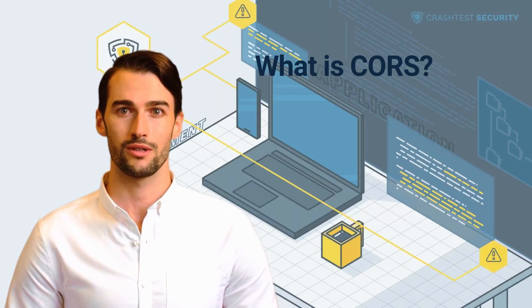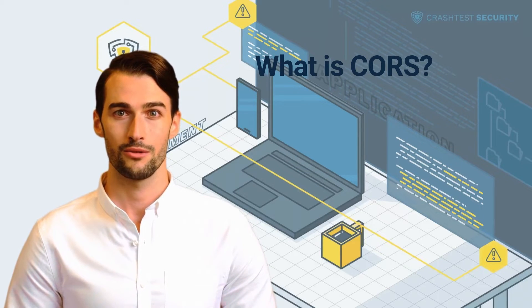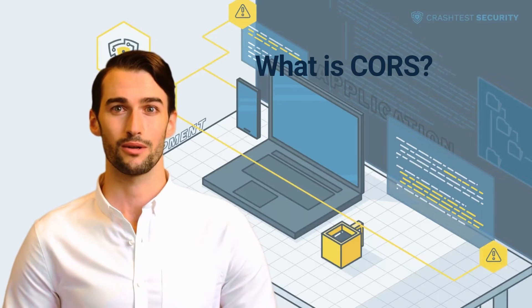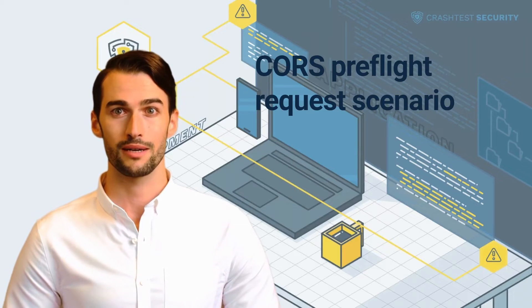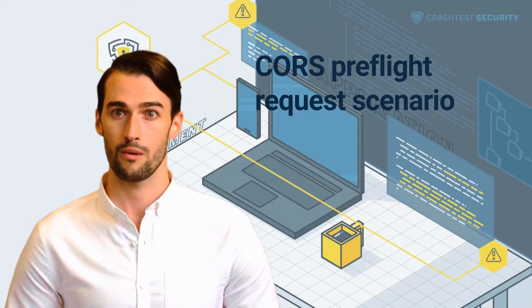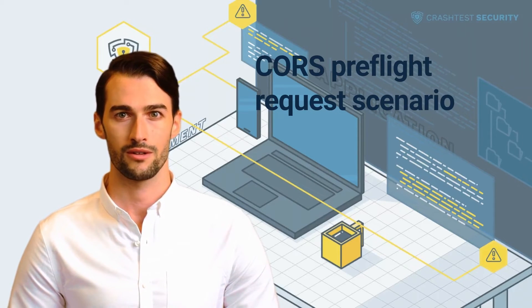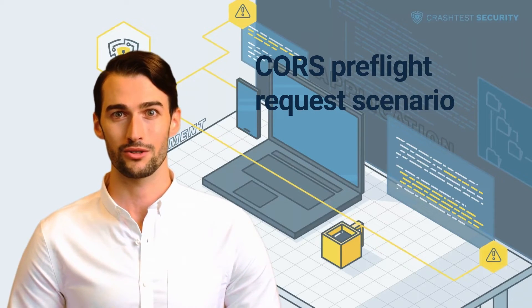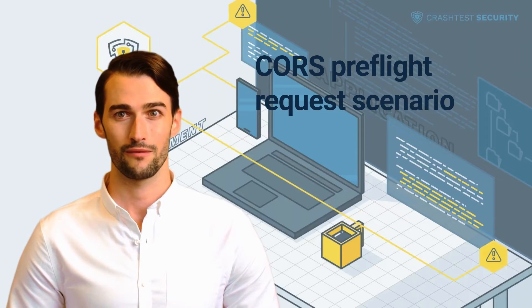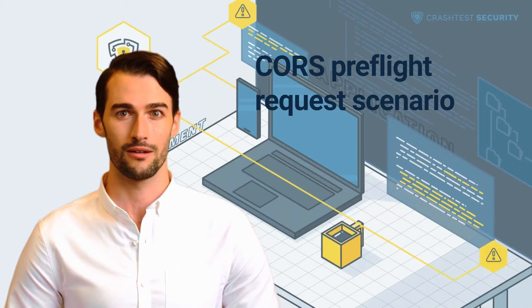One of the protocol headers used in CORS is the Access-Control-Allow-Origin header. This header is returned by servers when a cross-origin request is allowed, along with the conditions under which it is permitted. The CORS specification allows browsers to perform a preflight request to a server via the OPTIONS method. This is used to determine whether they will be allowed to perform a specific cross-domain request, especially one that contains non-standard HTTP methods or headers that can modify data.